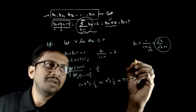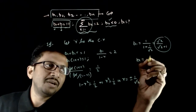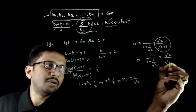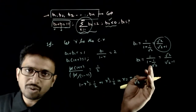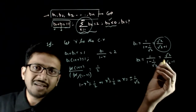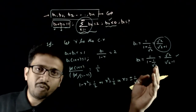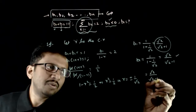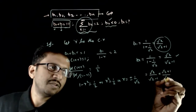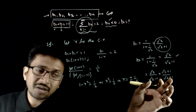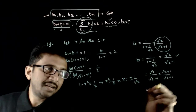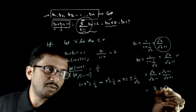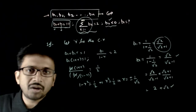Substituting r = −1/√2: b1 equals 1 divided by (1 minus 1/√2), which equals root 2 divided by (root 2 minus 1). This is the required answer. To rationalize, multiply by (root 2 + 1): the denominator becomes 2 minus 1 equals 1, and the numerator becomes root 2 times (root 2 + 1) which is 2 plus root 2. So b1 = 2 + √2.